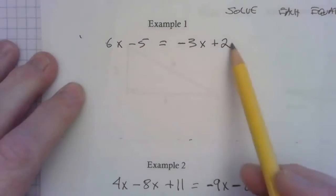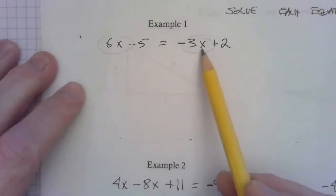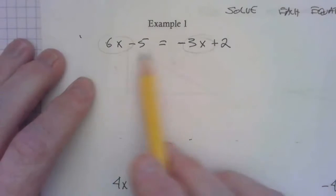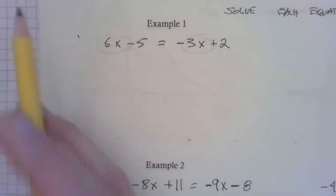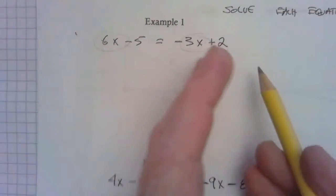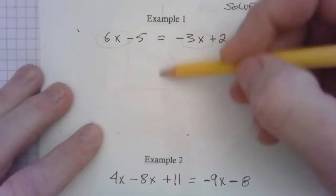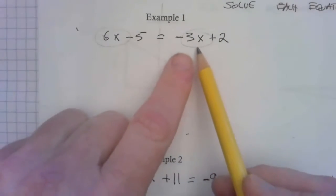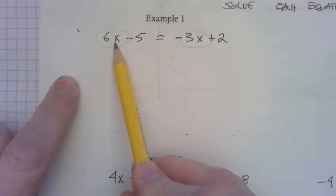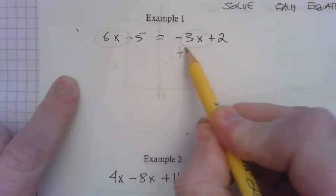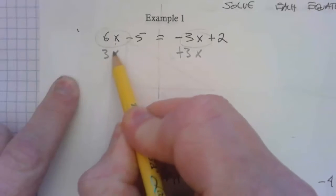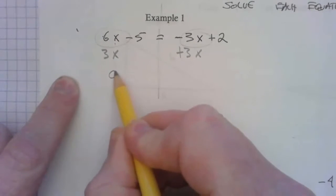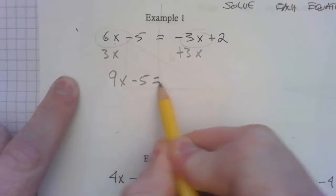We have x's on both sides, and so what we need to do is move things around by adding and subtracting things to both sides to get x's on one side. We'll put them on the left, and anything that isn't an x on the other side. So 6x is fine over here, I'm going to have to add 3x to both sides. Let's take our time with this. That gives me 9x minus 5 equals 2.